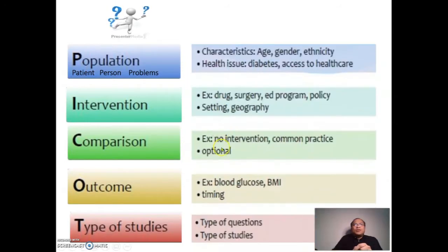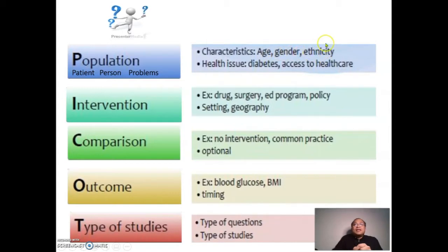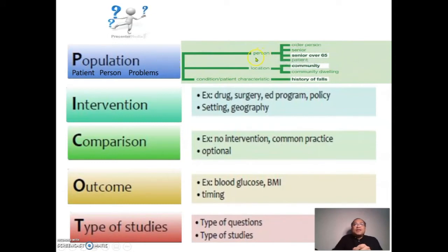The letter P for population refers to the age and characteristics of the patient — how old they are, whether male or female, and their ethnicity. It can also be a health issue, such as whether the patient suffers from diabetes or has limited access to healthcare. Further, P can represent a person, a location — such as whether the problem is within the community — or a condition of the patient, such as a history of falls, which is very common among geriatrics or pediatrics.